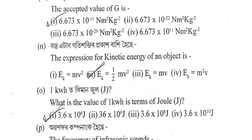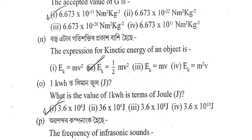Next question: The expression for kinetic energy of an object is: EK = mv²; EK = ½mv²; EK = mv; or EK = m²v? The correct answer is option 2 — EK = ½mv².